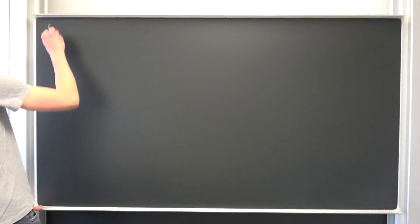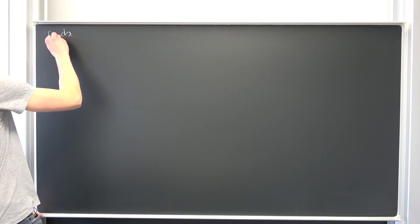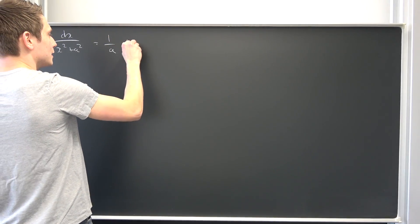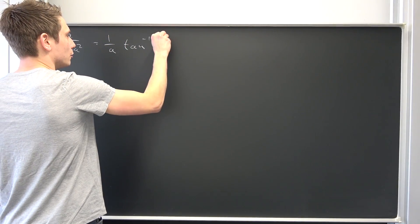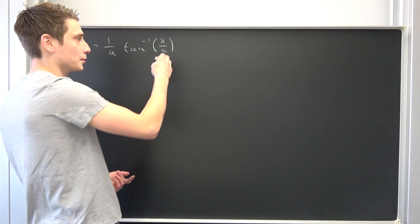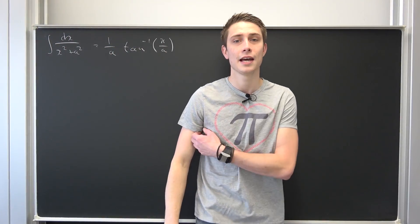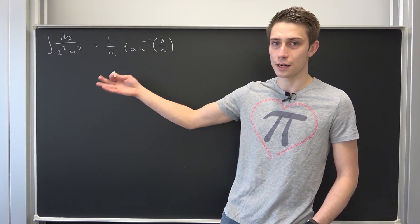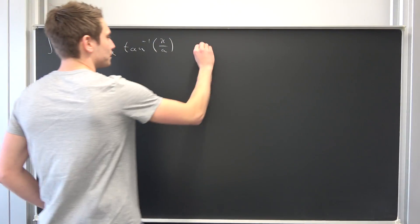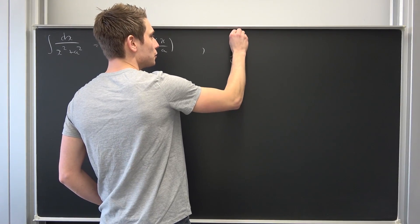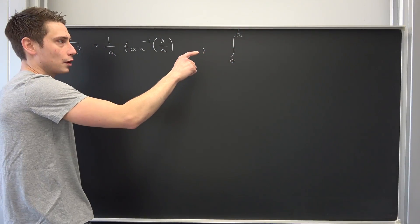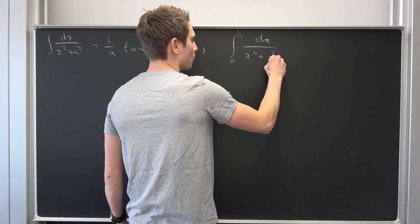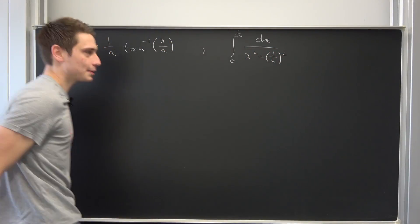So we know that the integral of dx over x squared plus a squared is going to be 1 over a times the inverse tangent of x over a. And you can apply the boundaries if you want, plus some arbitrary constant c. Easy peasy, lemon squeezy.